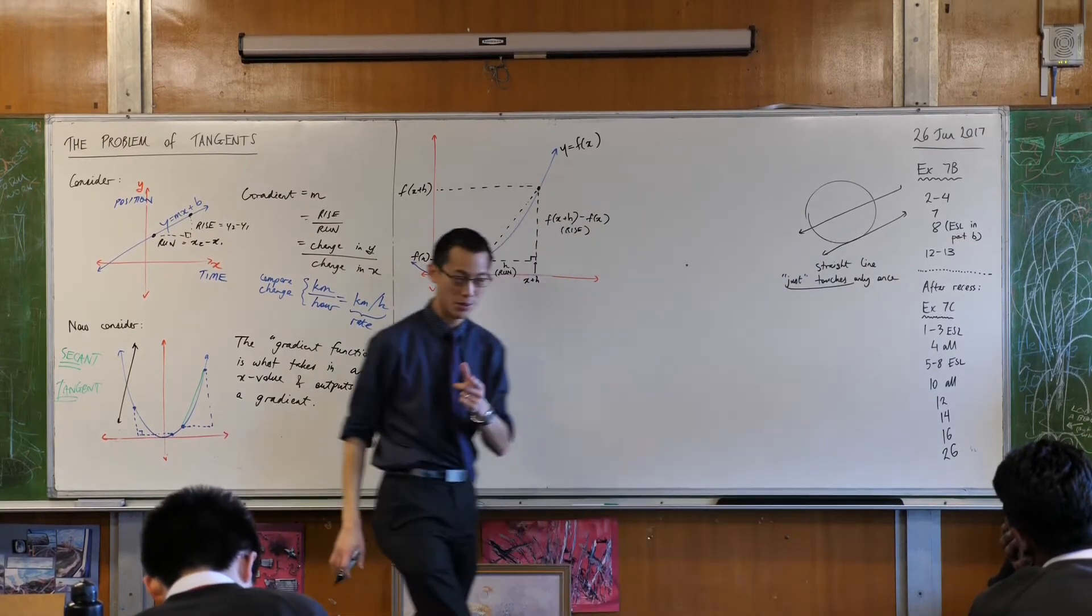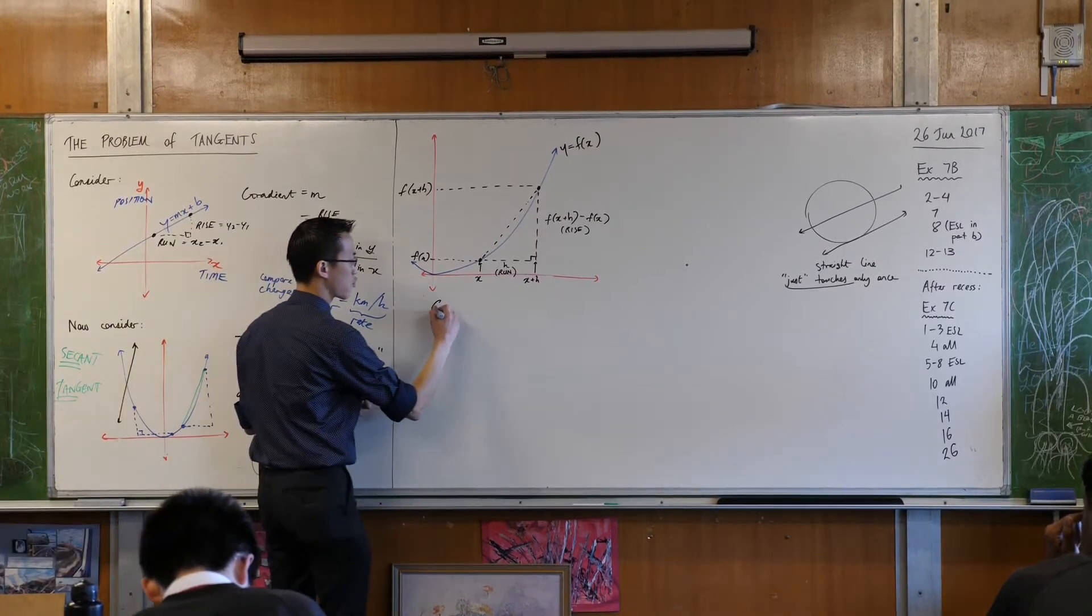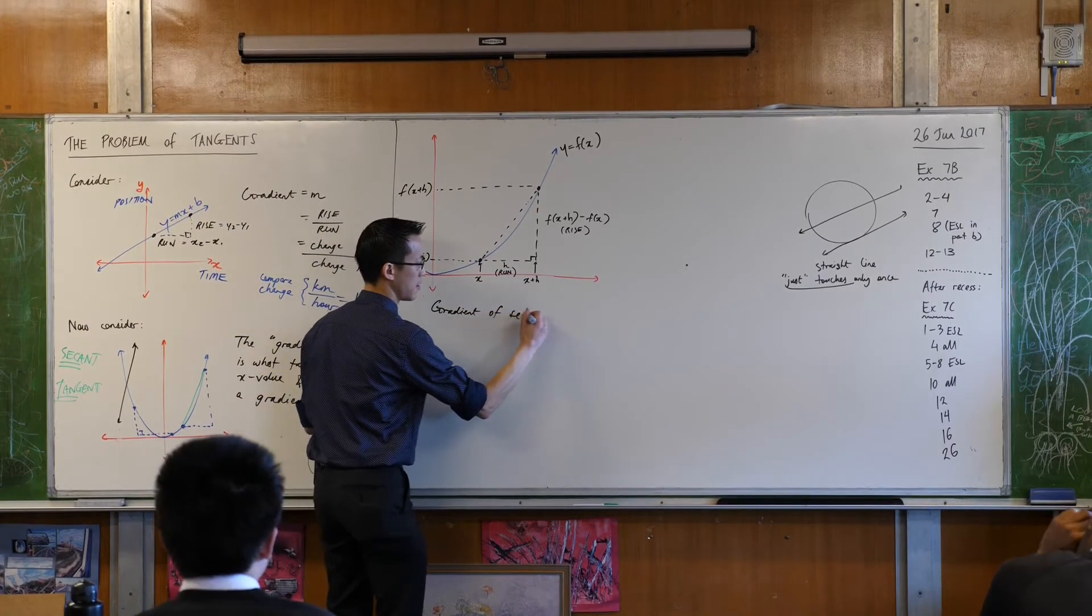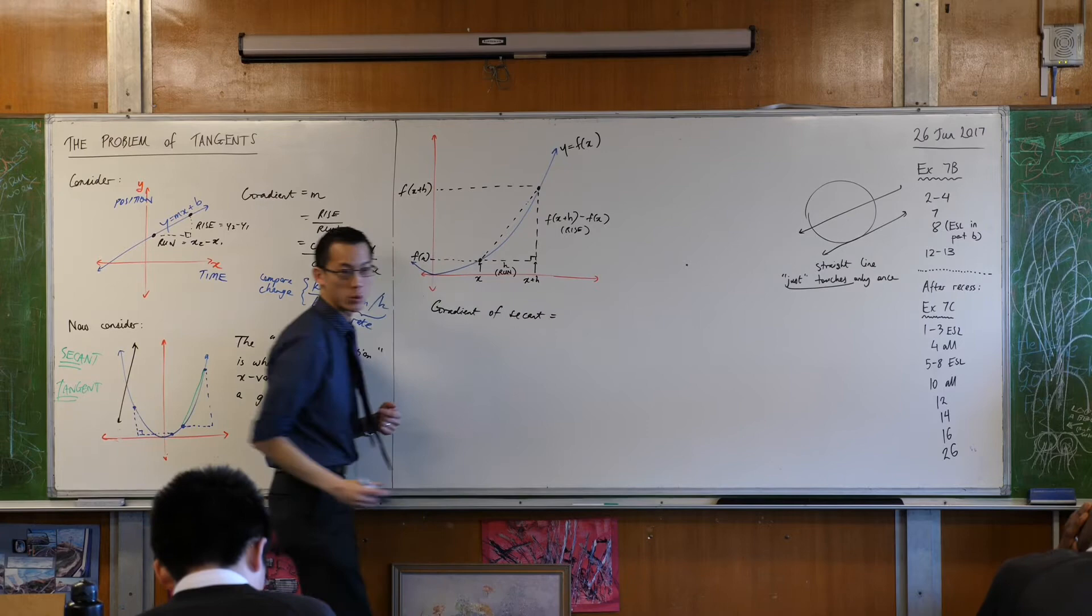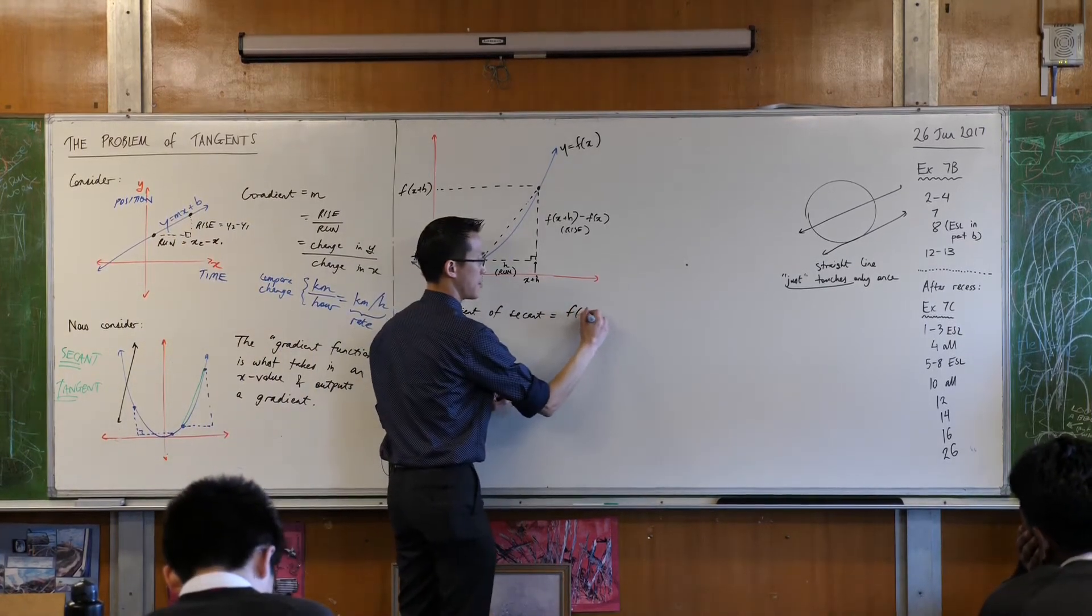Okay, so now that I've got rise and I've got run, I can say the gradient of the secant is equal to rise over run. I'm going to write this.